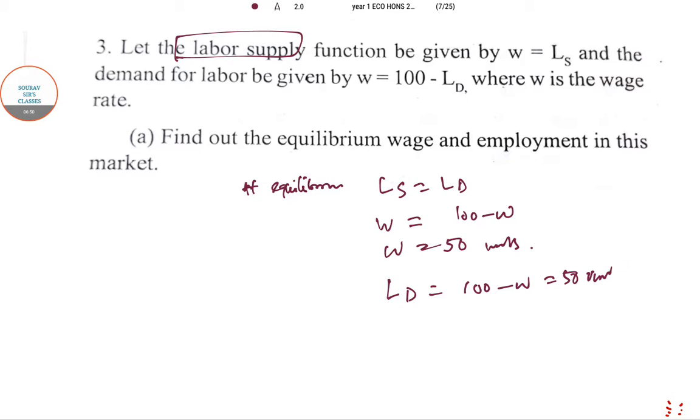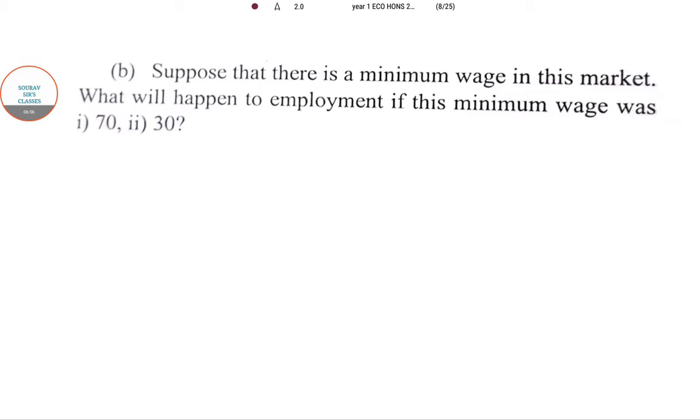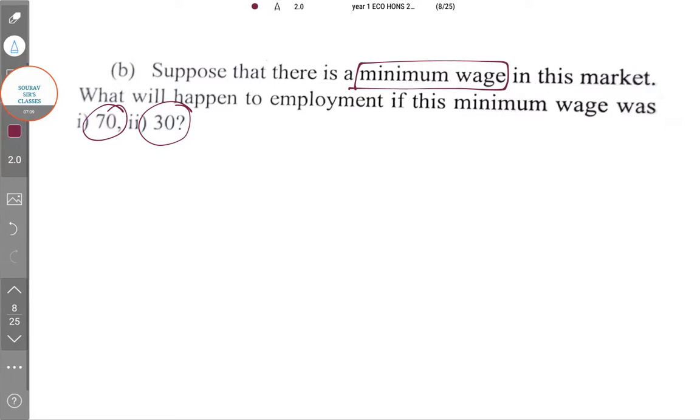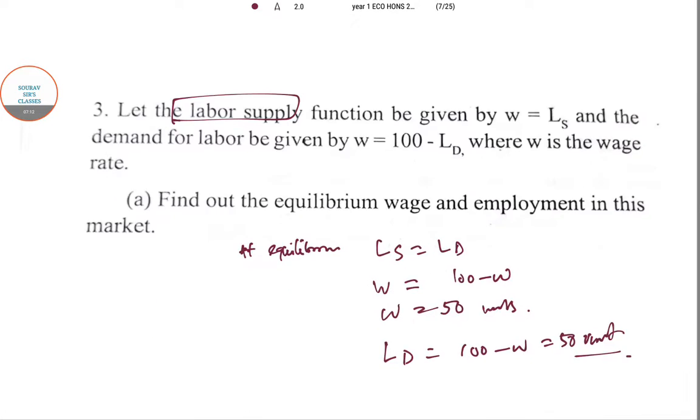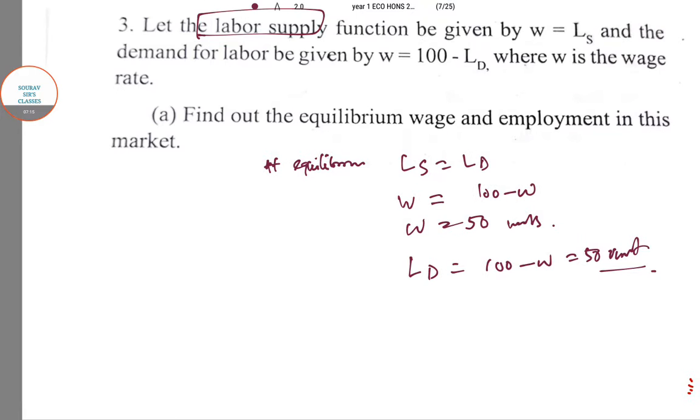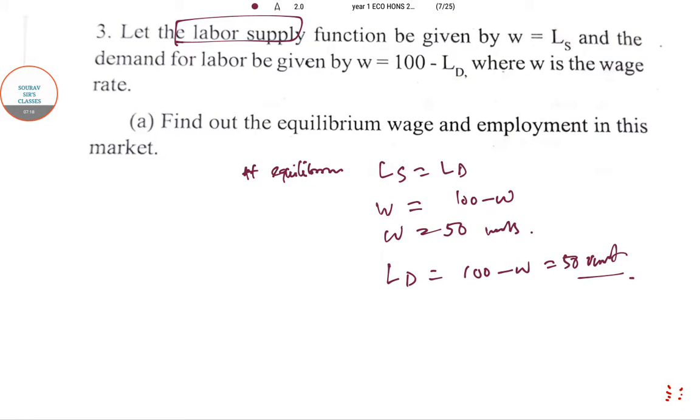There is a second part to this question: suppose there's a minimum wage in the market. In general, minimum wage is not equal to the equilibrium wage. What would happen to employment if the minimum wage was 70 and 30? So wages are changing: W = 70 and W = 30.